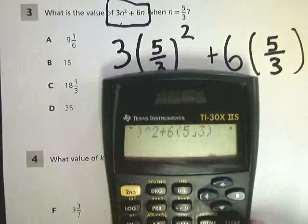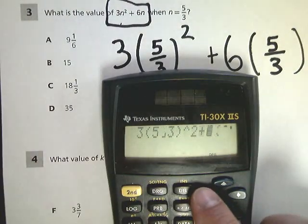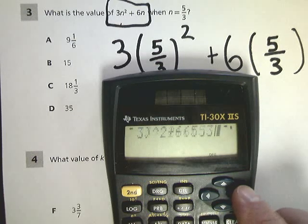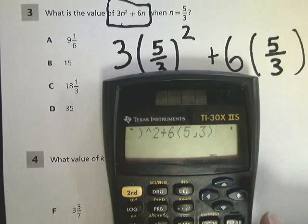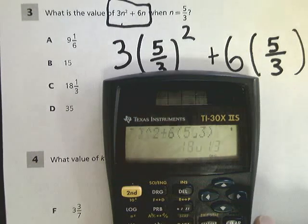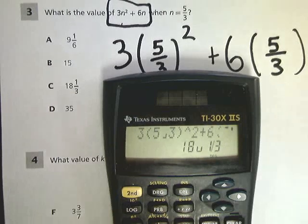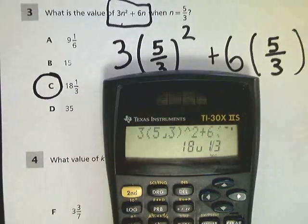And so it should look exactly like this underneath, and I'll click back to the front. So I've got 3 parentheses 5 thirds and that's squared, plus 6 parentheses 5 thirds. That's all there and perfect. And then you hit enter, and you get 18 U 1 3rd, which means 18 and 1 3rd. So your answer to number 3 is C.